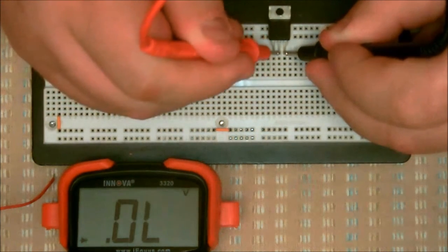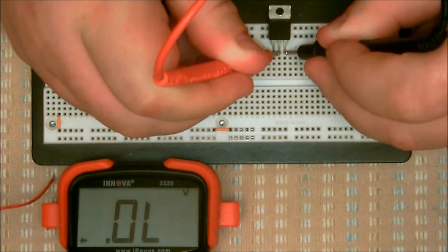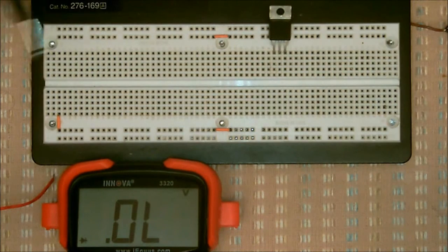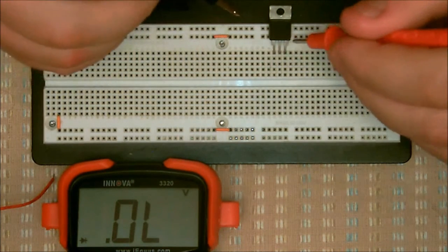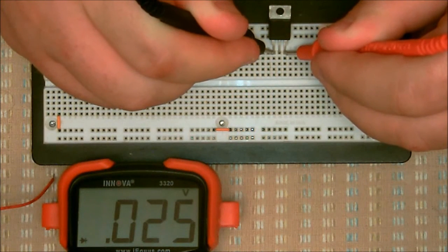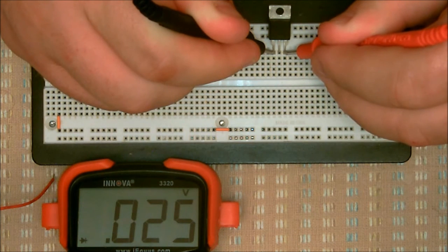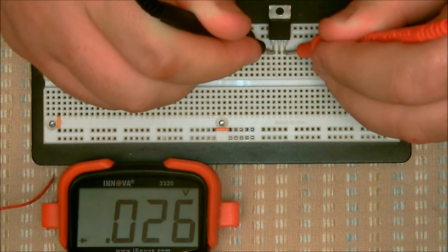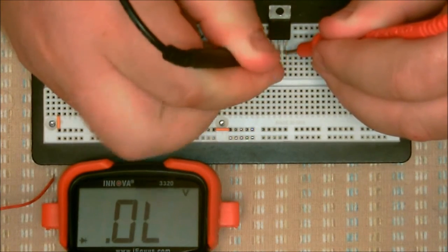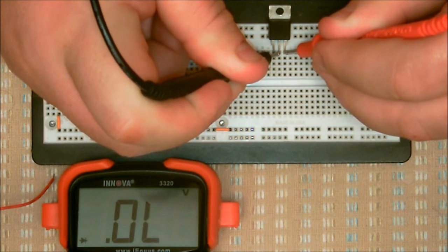Let's check MT2. Notice that there's no measurement. Now, switch your polarities again. Again, notice how it shows that there requires a little voltage to go between the gate and MT1. Check it with MT2. And again, you get no measurements. This is how you would identify using your diode check to check that this transistor is good.